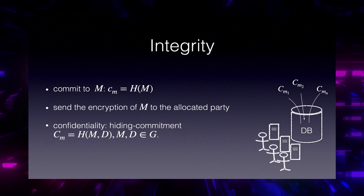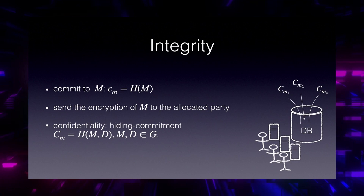For integrity, each data owner needs to commit to their message and put it in a database. Because of confidentiality, this cannot be a simple commitment like H(M); it has to be a hiding commitment. So instead we use H(M, D), where D is a hiding factor. Later, when the data owner wants to send the message to the party, they encrypt message M but also encrypt the hiding factor D. Both M and D have to be in group G because we are going to use ElGamal.